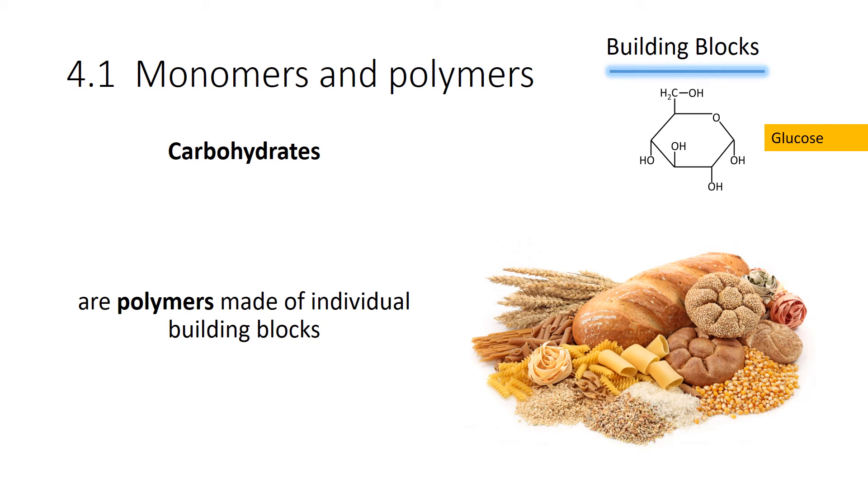Monomers and polymers. A monomer is a building block. A polymer is a large molecule made of many building blocks. So for example, carbohydrates are a polymer and the monomer, in this case, would be glucose, which is the building block. So when you think of complex carbohydrates, those are polymers made up of lots of glucose molecules.